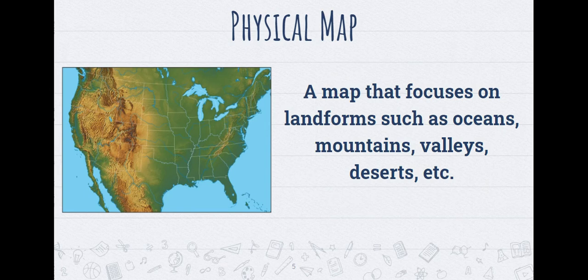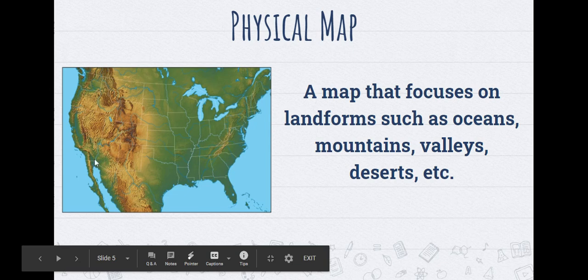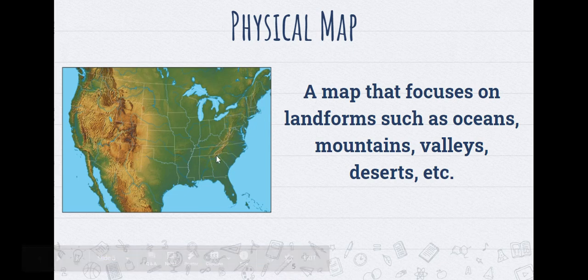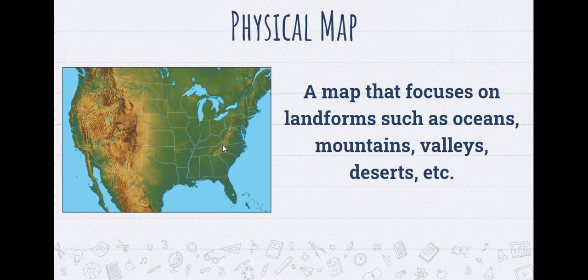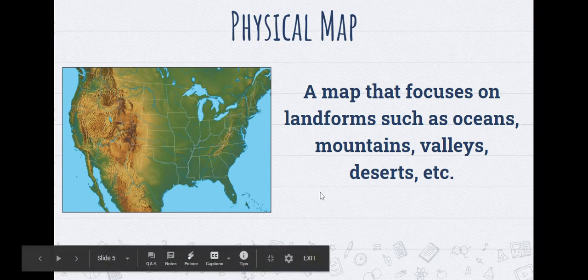Next we have a physical map. A physical map is going to maybe show us the boundaries but it's really going to focus on landforms such as oceans, mountains, valleys, and deserts. In this map you can see the different mountain ranges. On the west side of the United States we have the Rocky Mountain Range and then right here we have the Appalachian Mountains on the east coast. This map is just going to show us the different landforms.